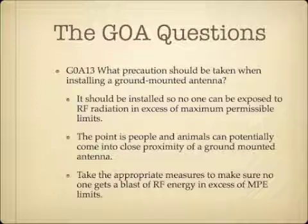What precautions should be taken when installing a ground mounted antenna? This goes back to the theme of indoor antenna installation. The answer is it should be installed so no one can be exposed to RF radiation in excess of maximum permissible exposure limits. People and animals can potentially come in close proximity to a ground mounted antenna since it's right there on the ground. Take appropriate measures to make sure no one gets a blast of RF energy in excess of MPE limits.